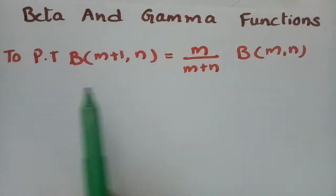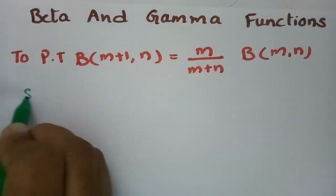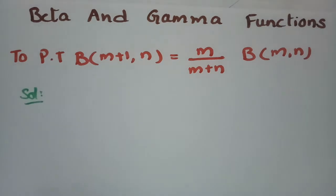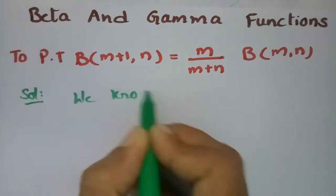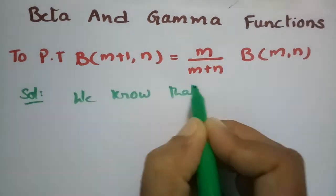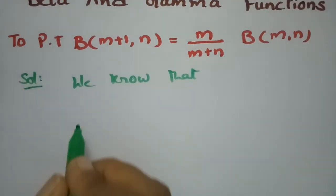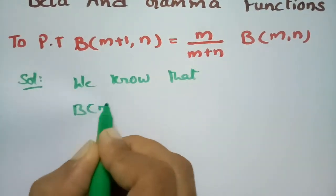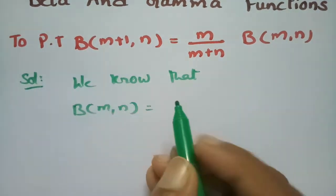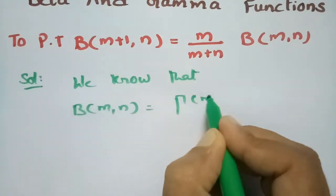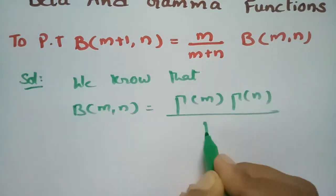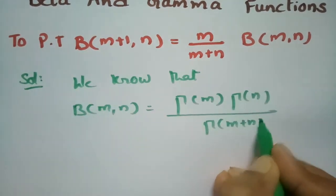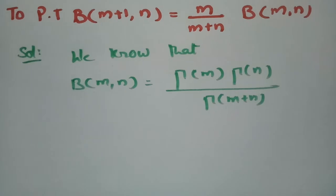In order to prove this, we have to use the important relation between beta and gamma functions. That relation is: beta of m comma n is equal to gamma m into gamma n by gamma of m plus n.